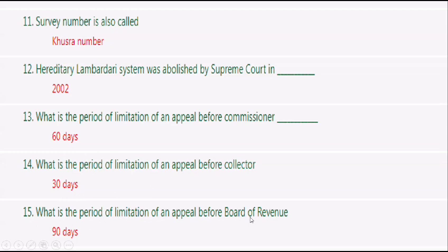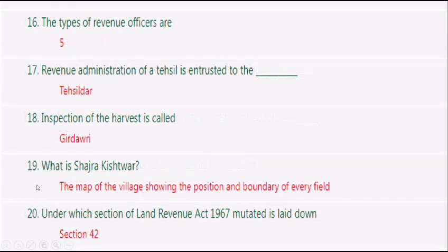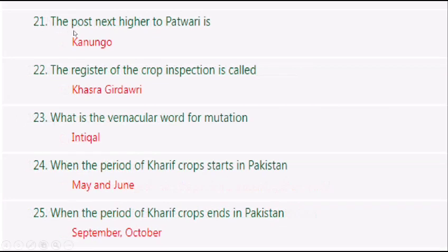The period of limitation of an appeal before the Board of Revenue is 90 days. The types of revenue officers are 5. The revenue administration of a Tehsil is entrusted to the Tehsildar. Inspection of the harvest is called Gurdwari. Shajray Kishtwar is the map of the village showing the position and boundary of every field. Under Section 42 of the Land Revenue Act 1967, mutation is laid down.